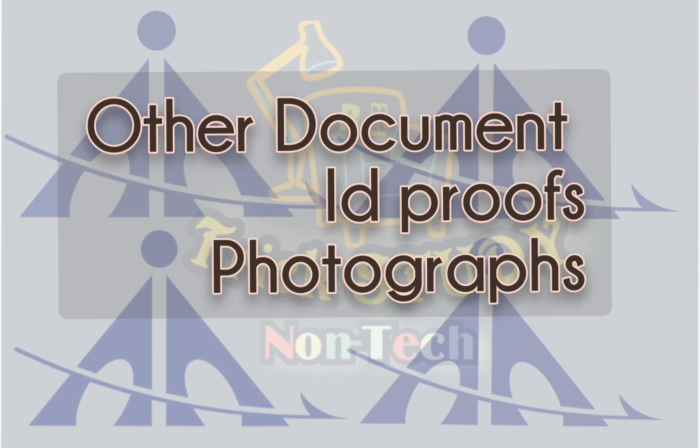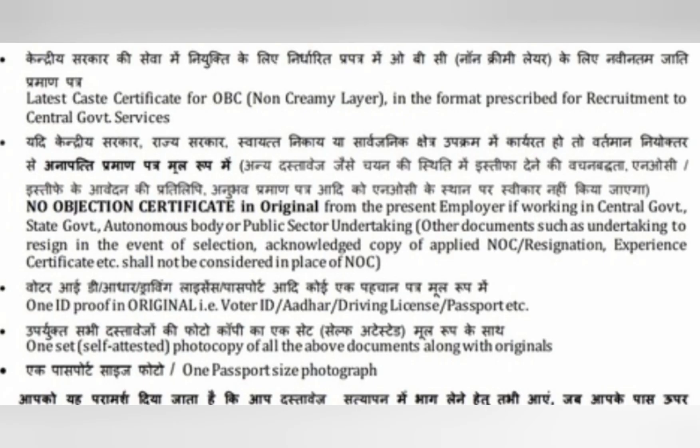Toh dekhte hain other documents mein — here we can see one ID proof in original, that is kuch bhi: voter ID, Aadhaar, driving license, or passport etc. And next, one set of self-attested photocopy of all the above documents along with original, and one passport size photograph.